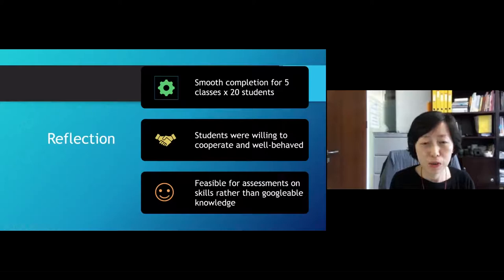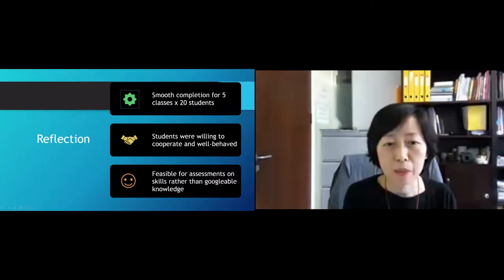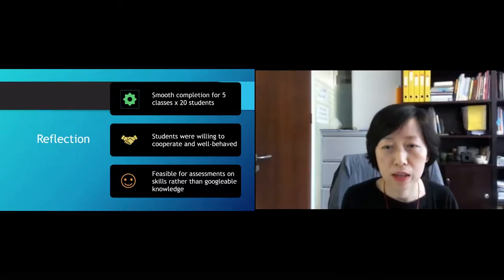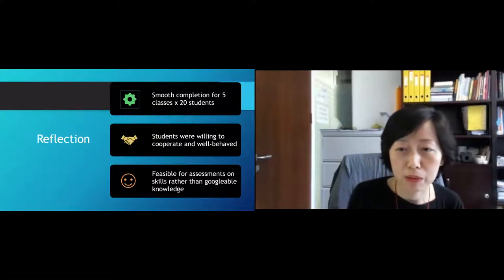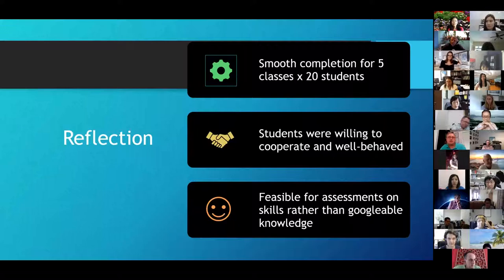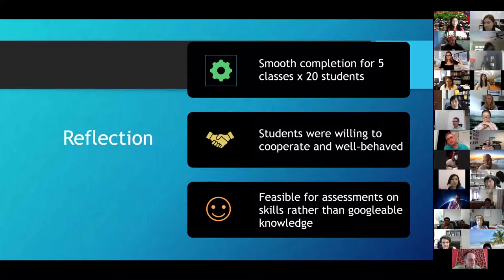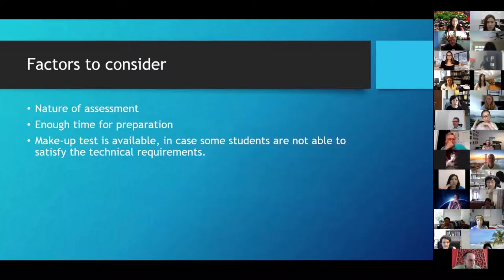Overall they found the process quite smooth across five classes of 20 students each. Students were willing to cooperate and generally well-behaved. There was some resistance at the beginning when the proctored online test was first announced, with some students saying it wasn't easy to set up the environment. After the rehearsal, they all figured out how to do it. They concluded that the arrangement is feasible for assessing skills rather than 'Googleable' knowledge, and that when students have had enough practice in class and feel prepared — and feel the instructors are also prepared — they are less likely to cheat.